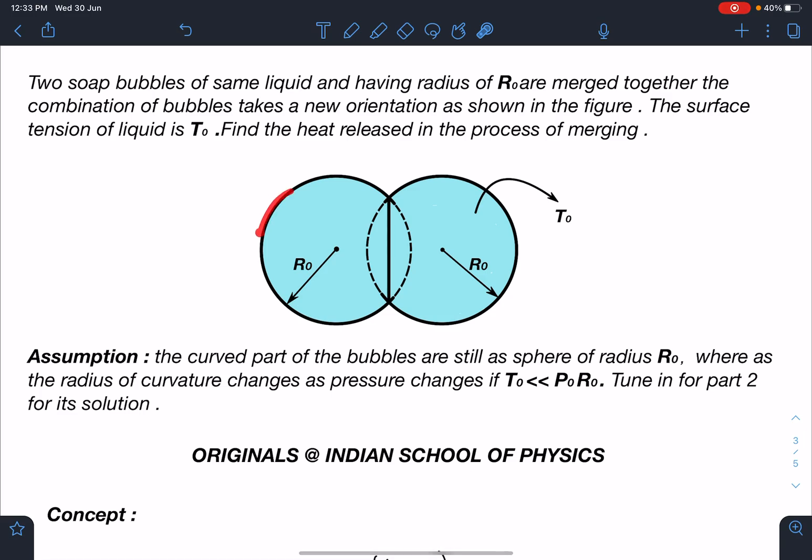Here the assumption which I'm taking is that initially individual bubbles are of radius R, and after the merging this curved part is also of radius R. In reality they will slightly change, so it depends on what model we are following. Here I have already restricted that the curved part is also the same, so this is the situation just after merging. I'm taking the same radius as initial.